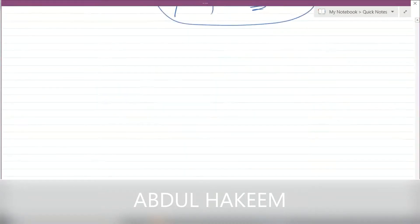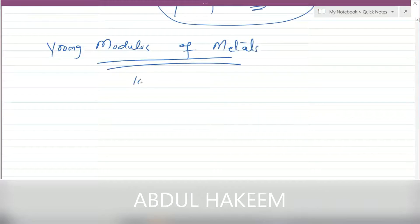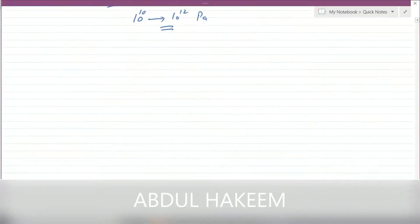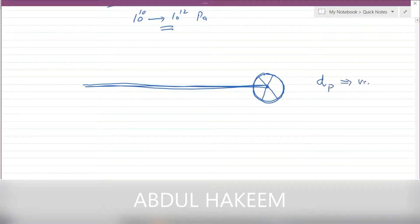Now we need to measure the Young's modulus of metal. The heading is: Young's modulus of metals. Approximately, it lies between 10 to the power 10 and 10 to the power 12 pascal. Suppose we take a horizontal surface like a bench, and here is a pulley. The diameter of the pulley is d_p, which is measured by the vernier caliper.